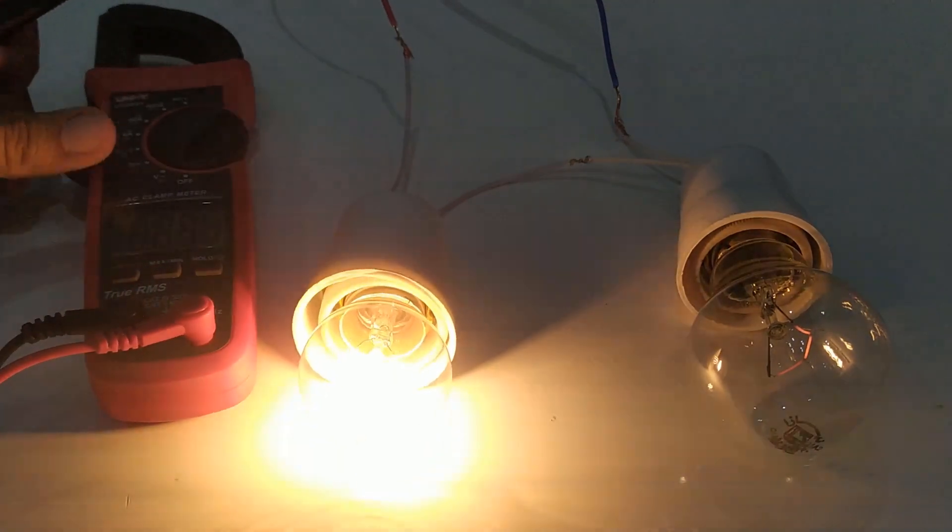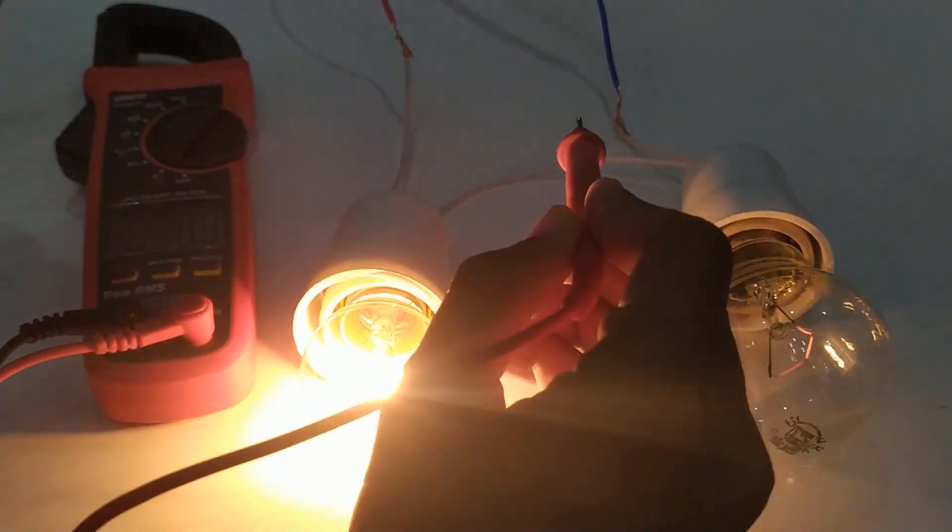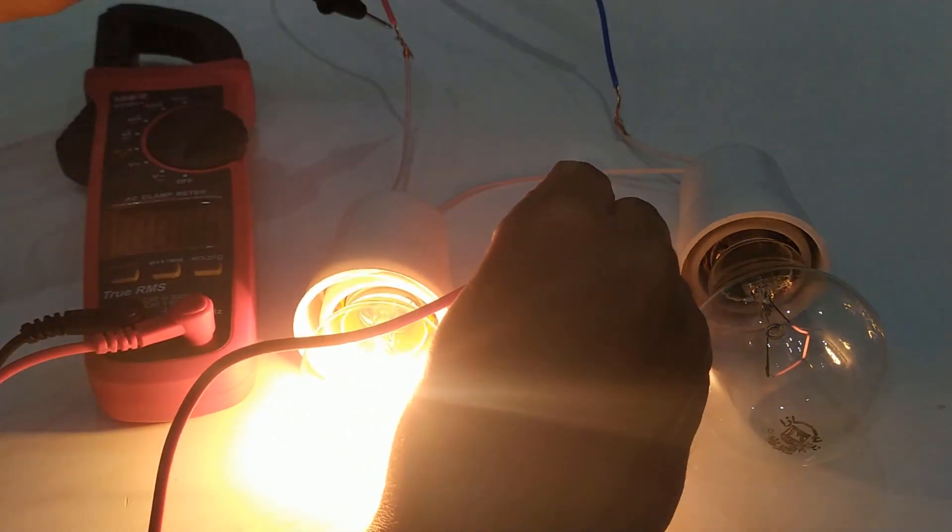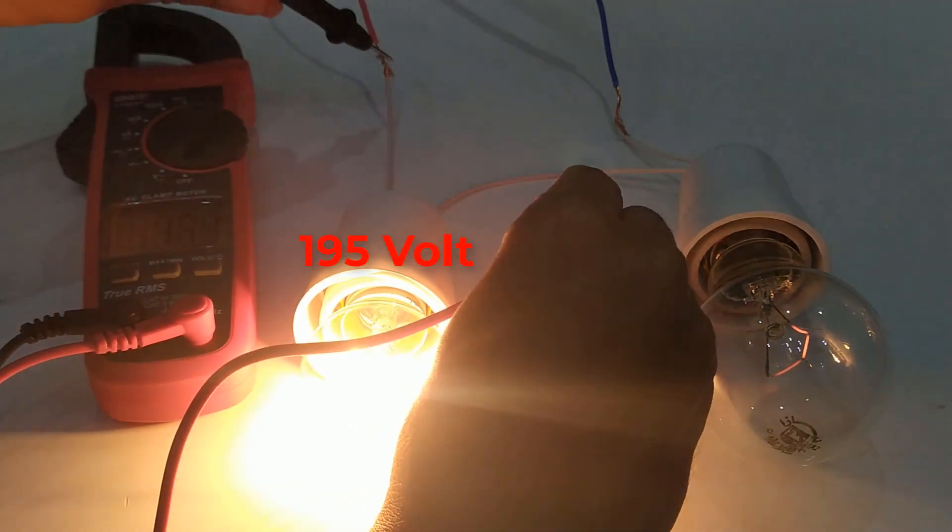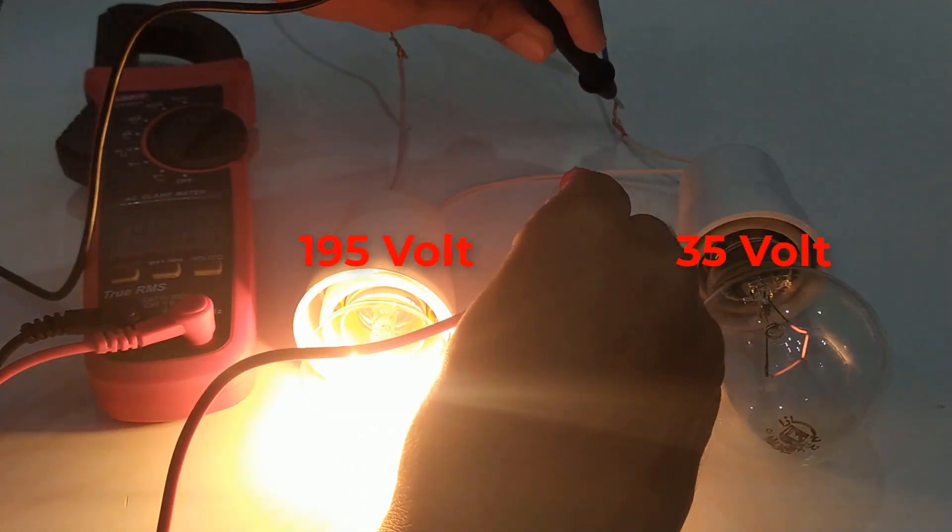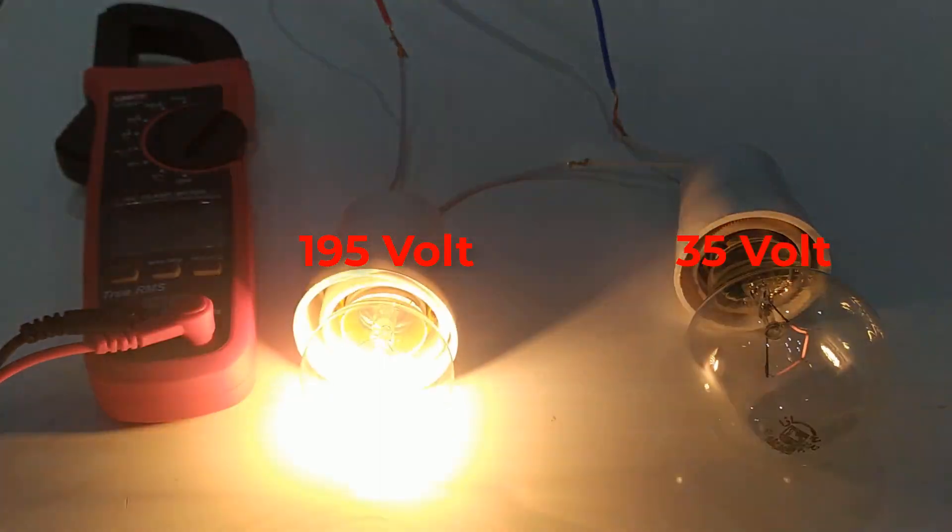Let's measure the voltage across the 40 watt lamp ends, which is equal to approximately 195 volts, and the other lamp voltage will equal approximately 35 volts.